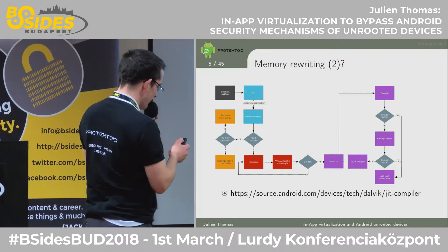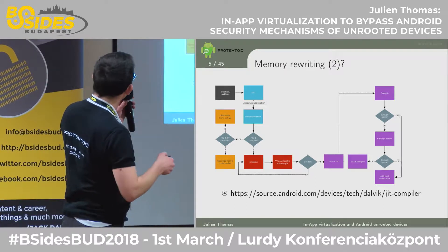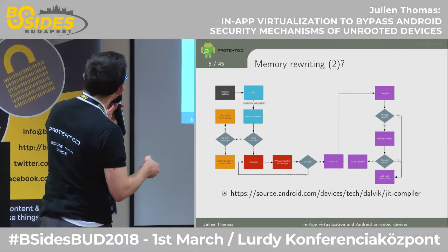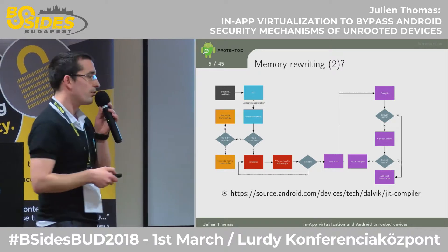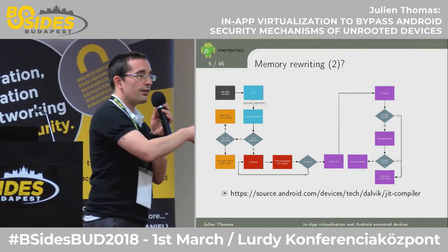Looking at the workflow — based on the Android documentation — we have code that is ART-mapped and then executed. Depending on the version of Android, it's either AOT or JIT. If neither applies, we try to interpret it, and if we can compile it, we will. The key point is that we put things into memory, and that's where we can play.